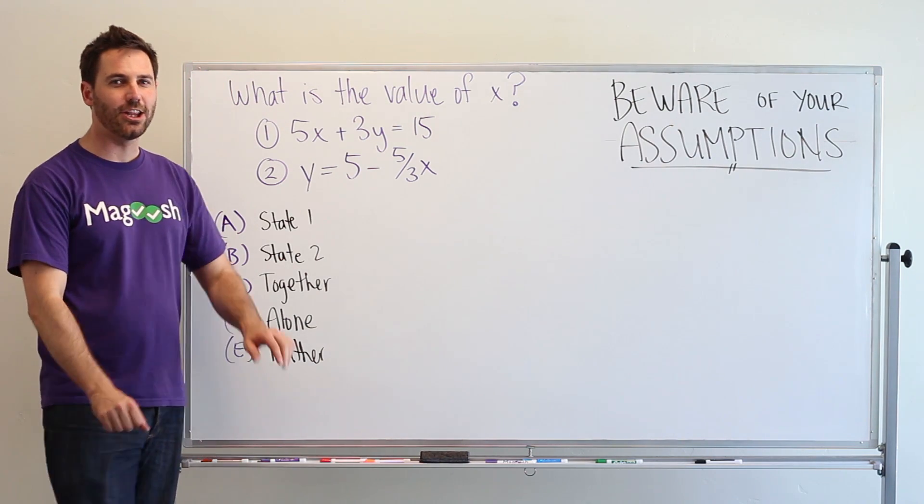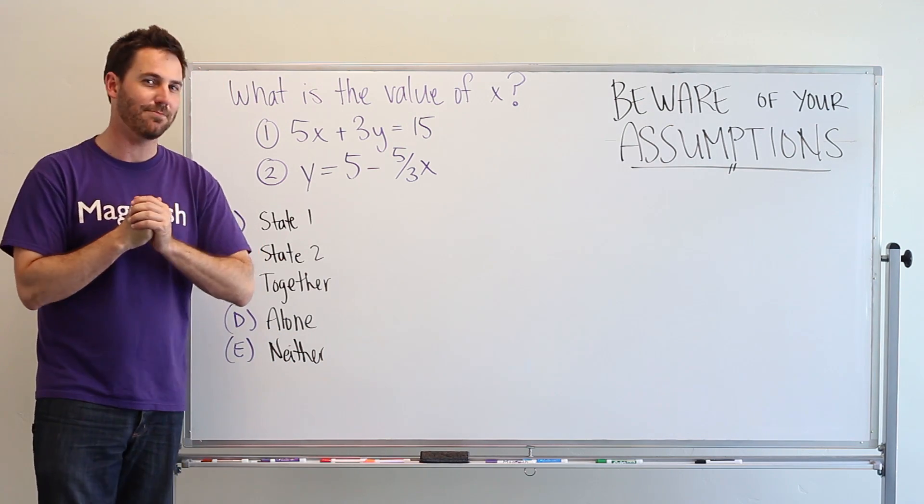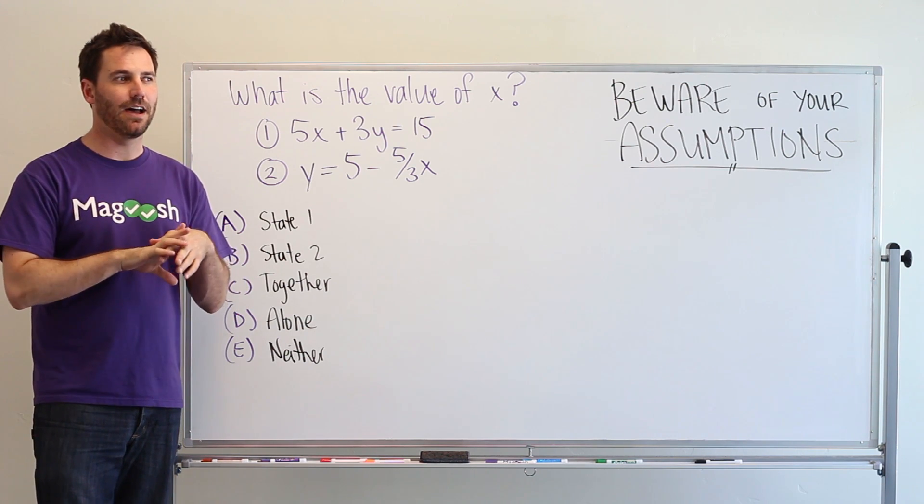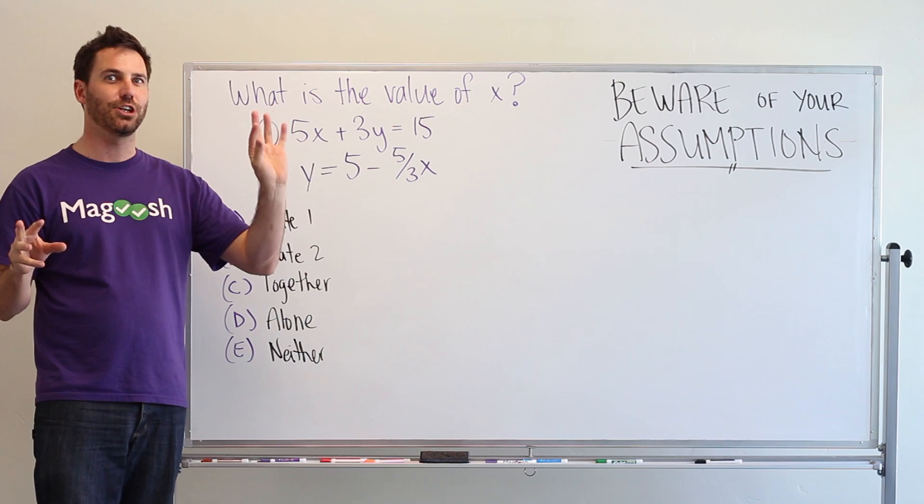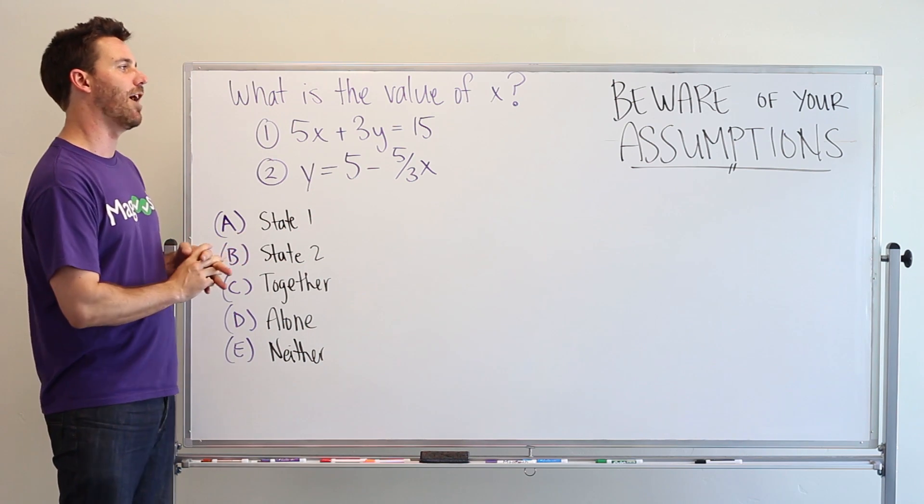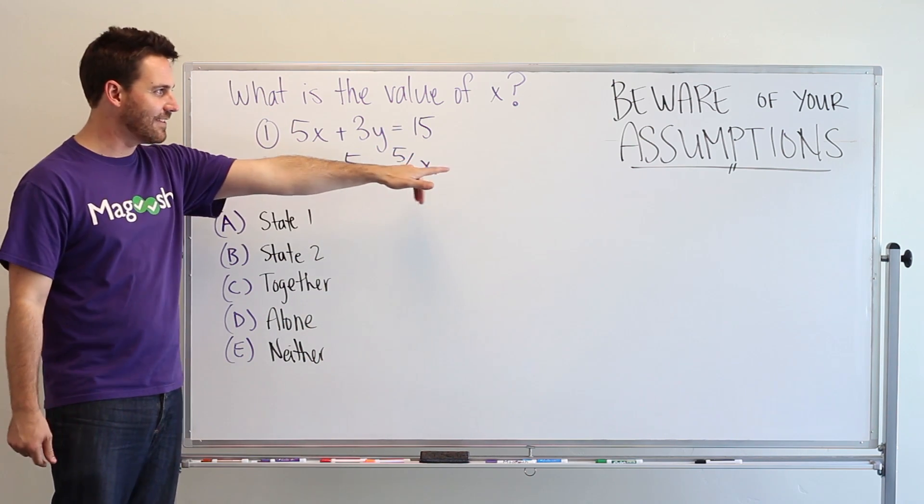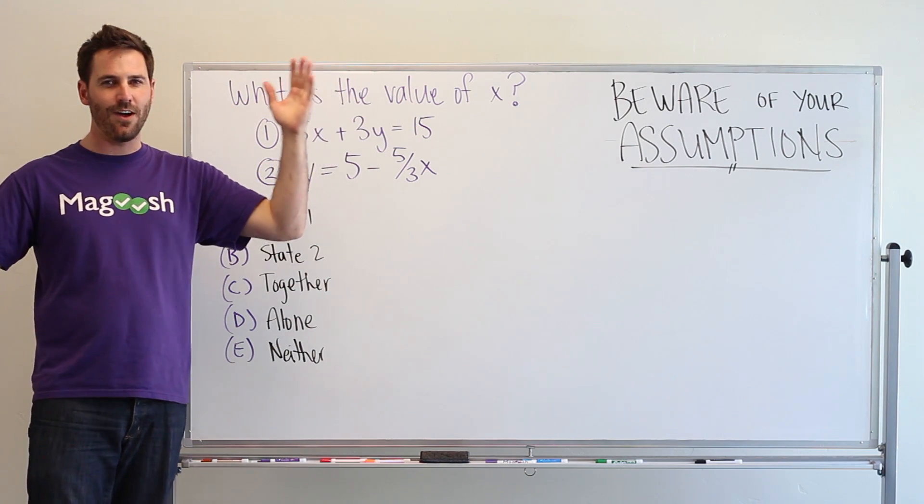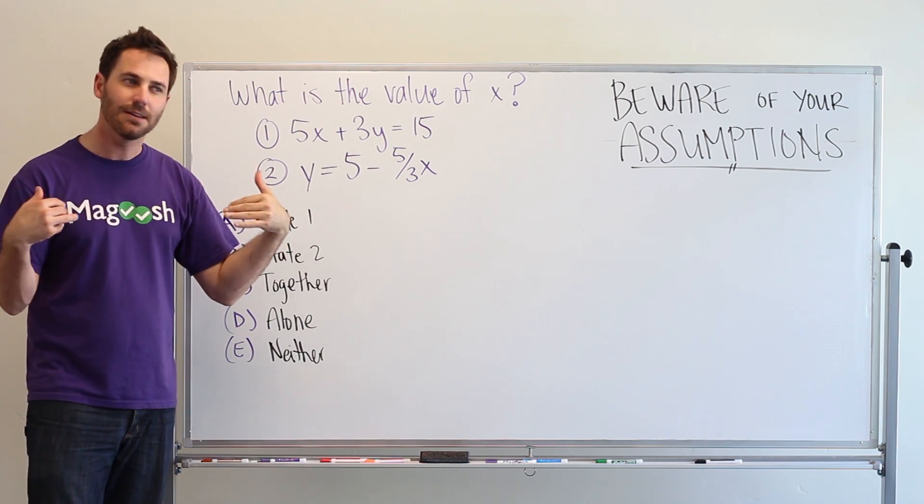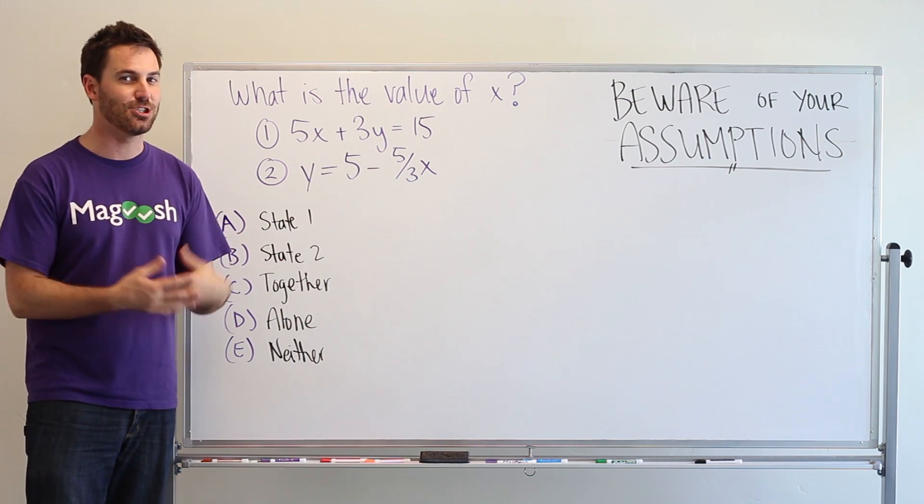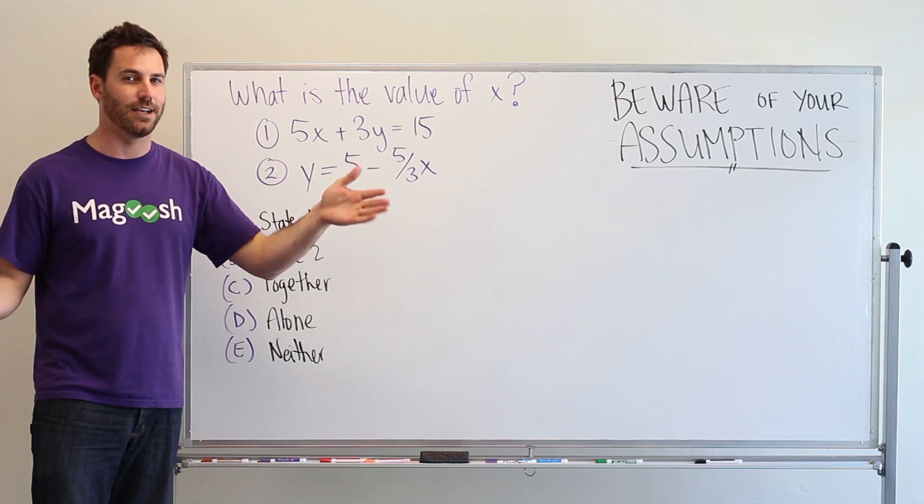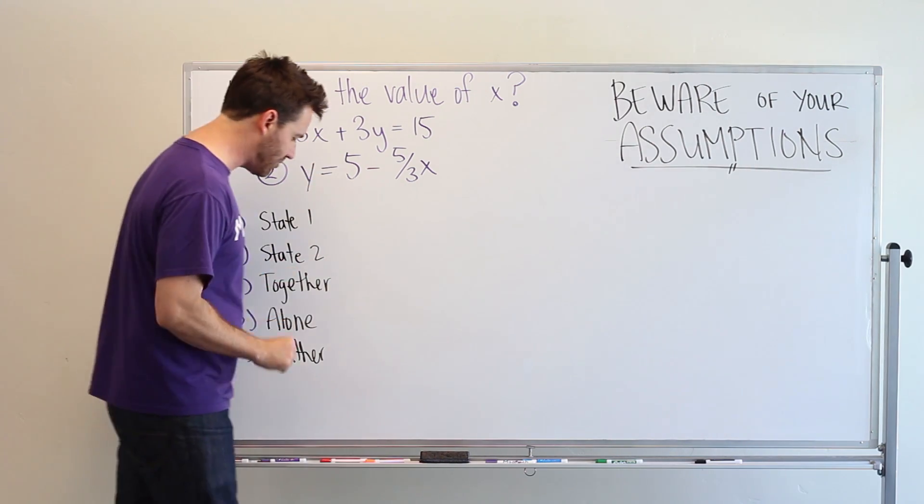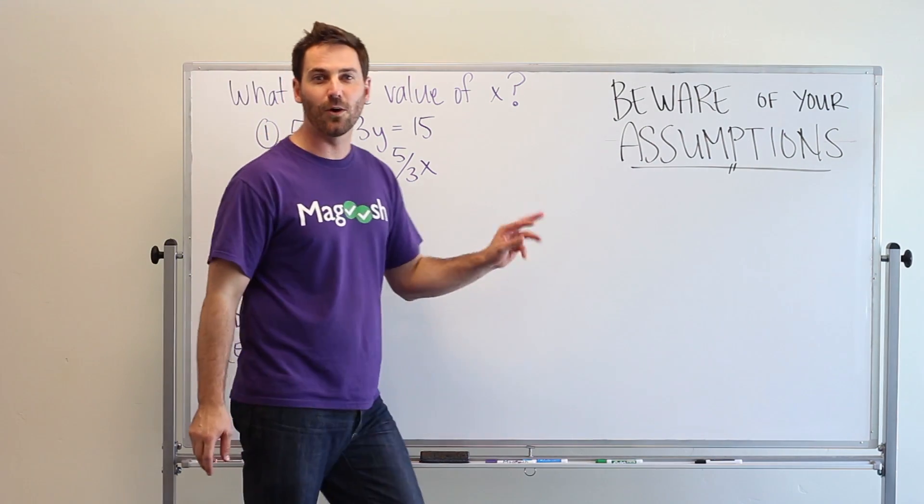Today we're talking a little bit about data sufficiency problems on the GMAT, and specifically a trap that you should avoid. Something that causes students some problems on the test are their assumptions. That's why I've written, beware of your assumptions. Don't be lazy. Don't jump into a problem and just assume that you know what's going on, because the GMAT's tricky. They make problems a little bit tricky, and they're looking for lazy students.